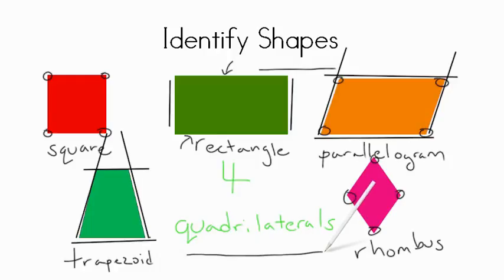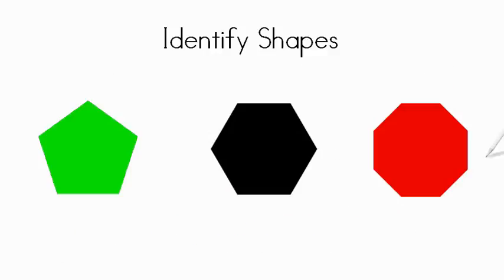So all of these are called quadrilaterals. Now let's go look at some shapes with more sides. Here we find some shapes that have more than four sides. First, here we have a shape with five sides. A five-sided shape is called a pentagon.